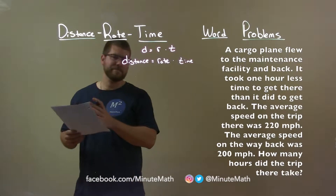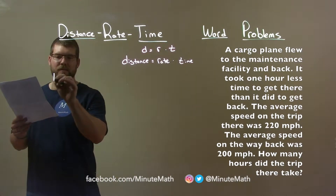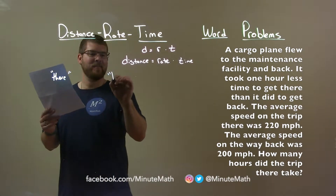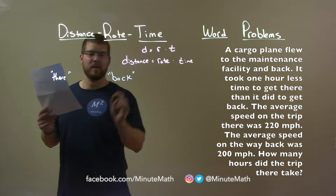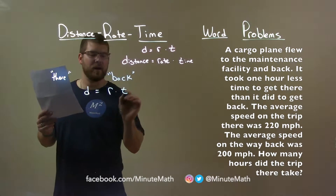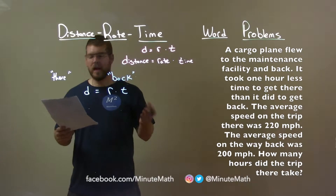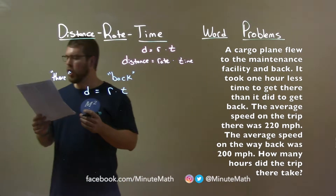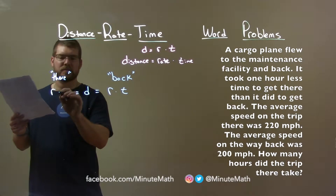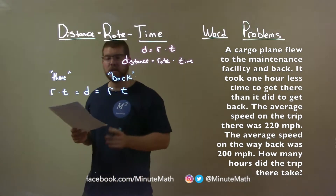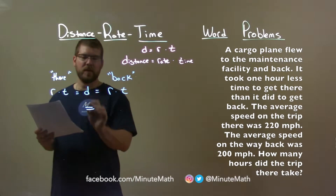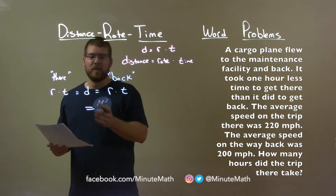We have two directions — there and back. Now, one thing we know is distance equals rate times time. But the same distance is traveled to get there as well as coming back — that cargo plane to the maintenance facility. So the rate times time going there should equal the same rate times time on the way back. Since they're both equal, we don't need to know what that distance is; we can set them equal to each other.